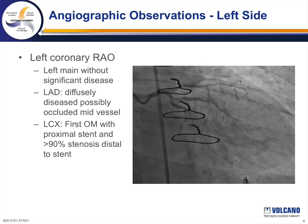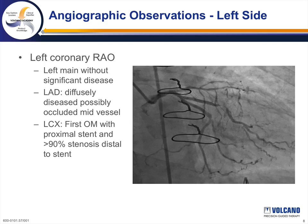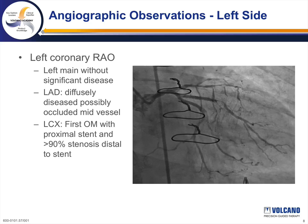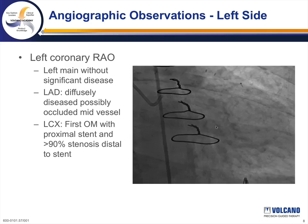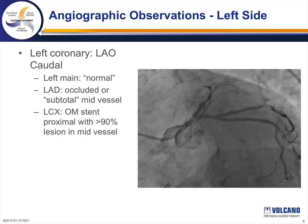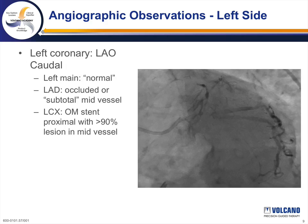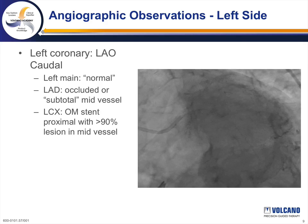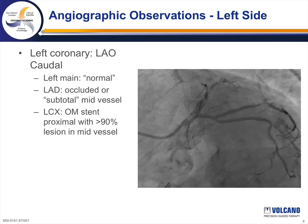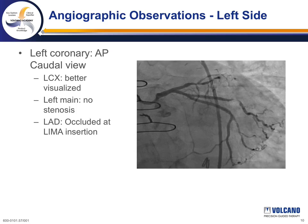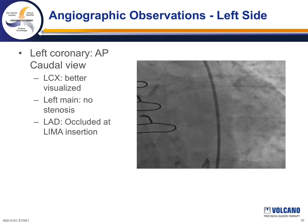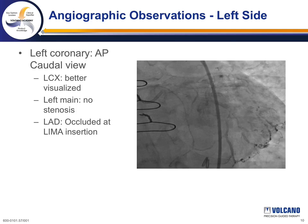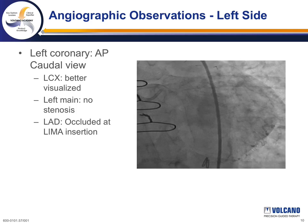She underwent angiography. Images of the left coronary system showed the left main with no significant disease. The LAD appeared diffusely diseased in the RAO view, and in the circumflex there appeared to be a stent in the first obtuse marginal branch with greater than 90% stenosis distal to the stent. In an LAO view, the diffusely diseased LAD is still evident, and the stenosis in the obtuse marginal branch appears more significant. In the AP caudal view, the LAD appears to be occluded at the insertion of the internal mammary artery graft.